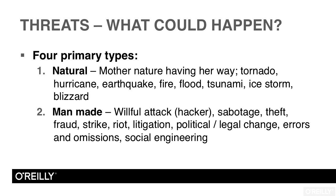It is our job as security professionals to mitigate the likelihood that these threats will impact us negatively. We might also look at errors and omissions — this is not a willful attack, but it is still man-made, and a lot of losses occur due to errors and omissions. Another human-born type of attack is social engineering, where a bad guy tricks one of your employees into providing unauthorized access — letting him into the warehouse to steal cell phones, or into an office to read confidential files. The social engineer tricks people into giving them access they are not authorized for.